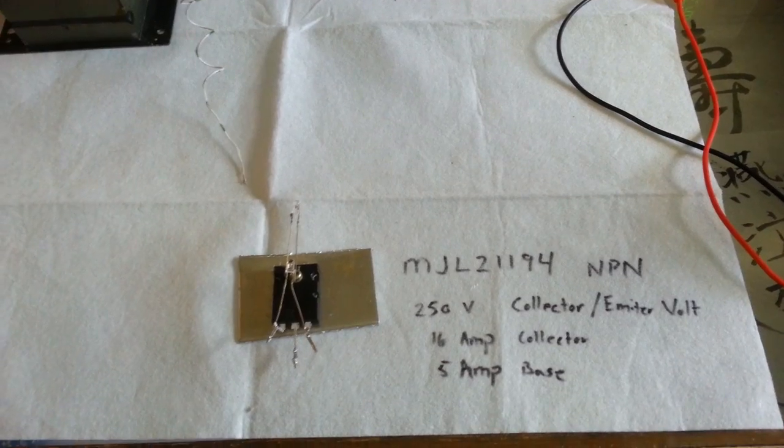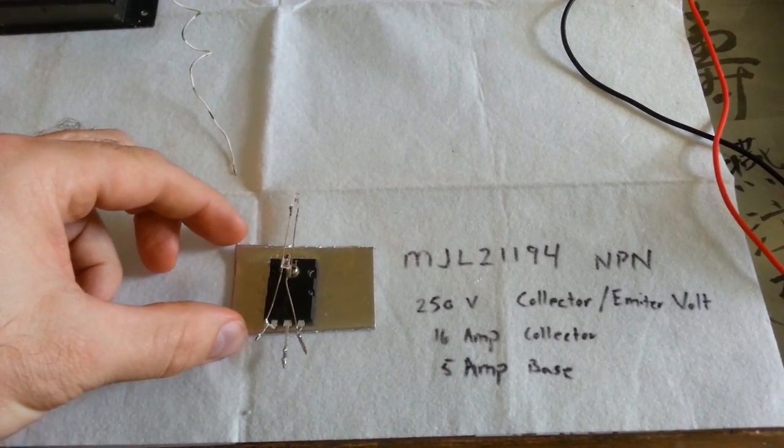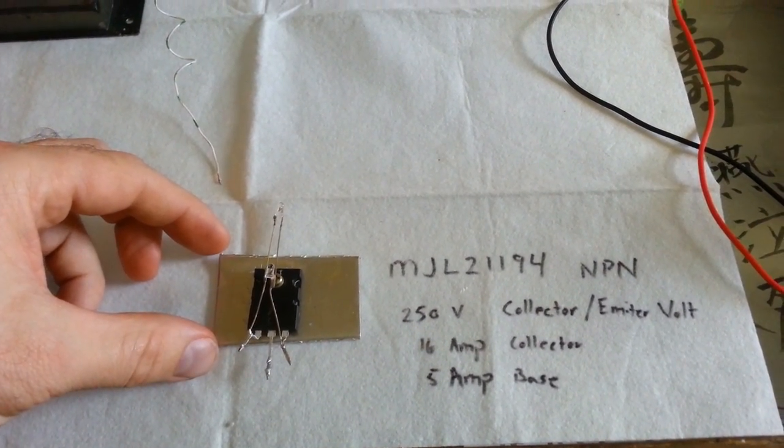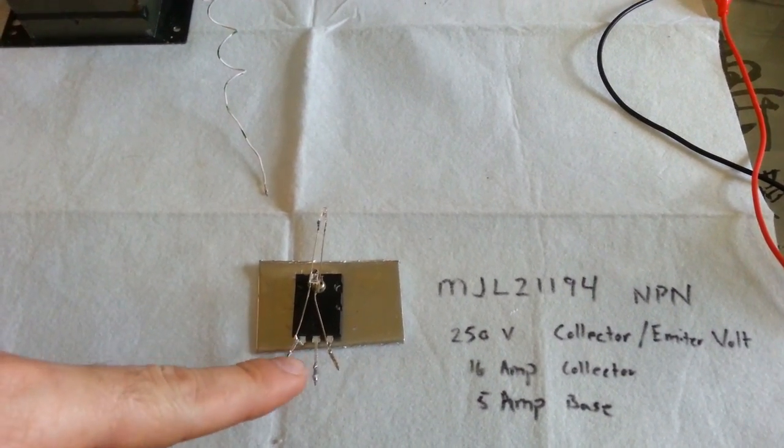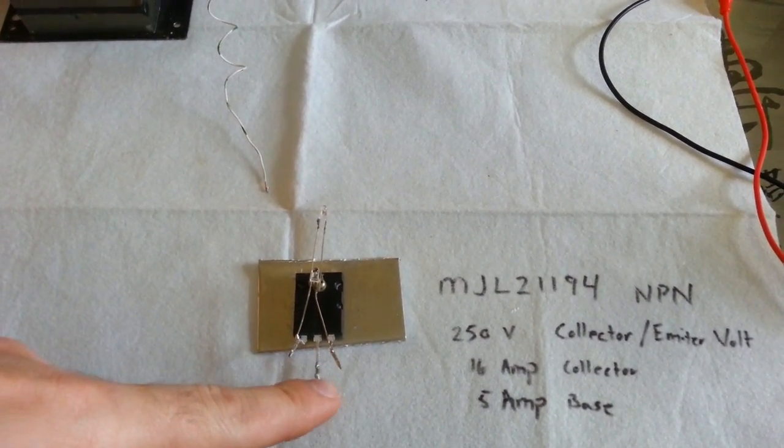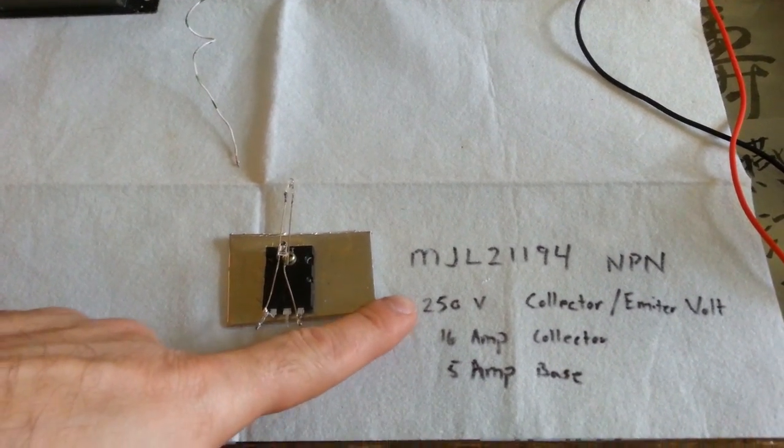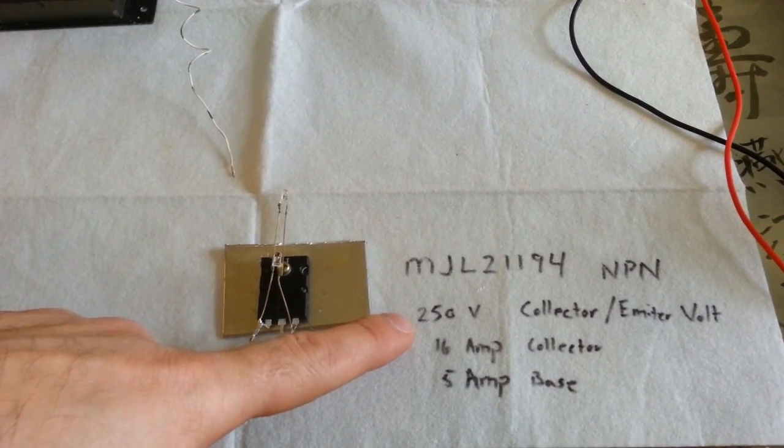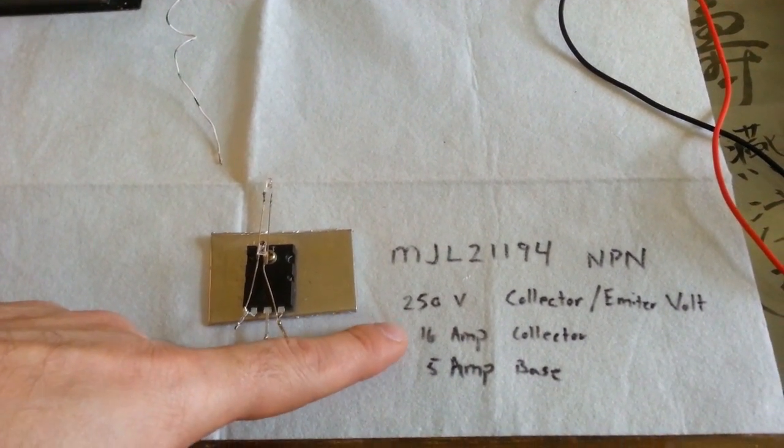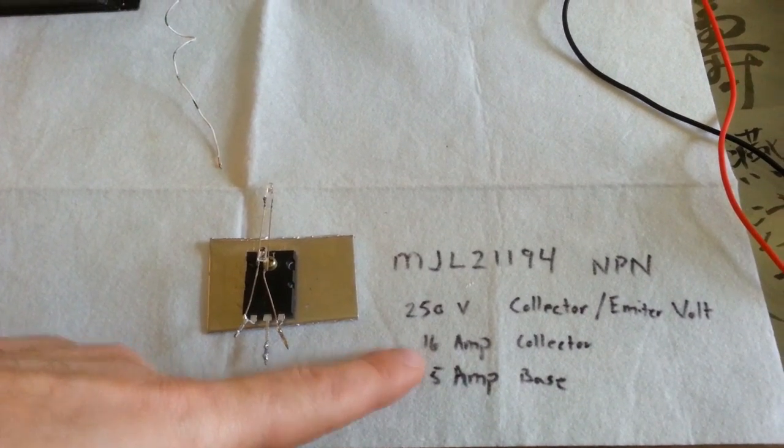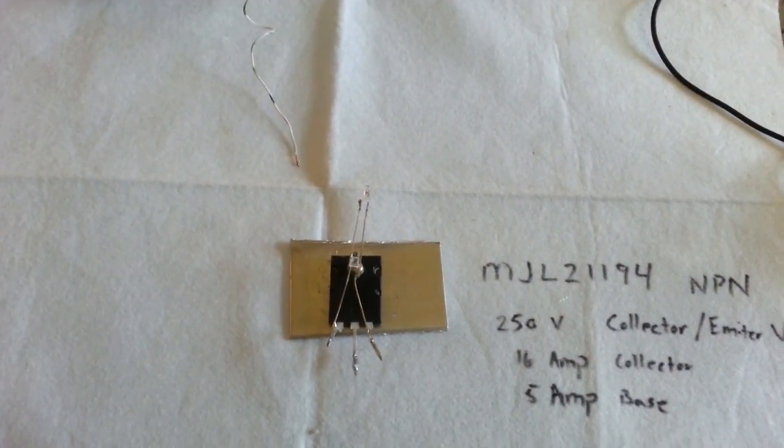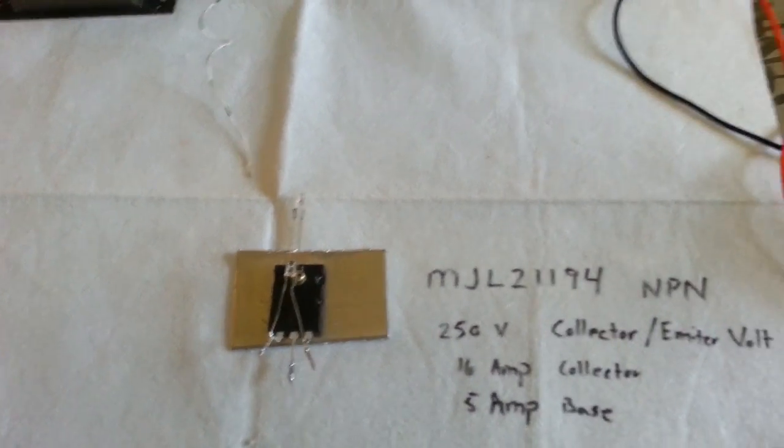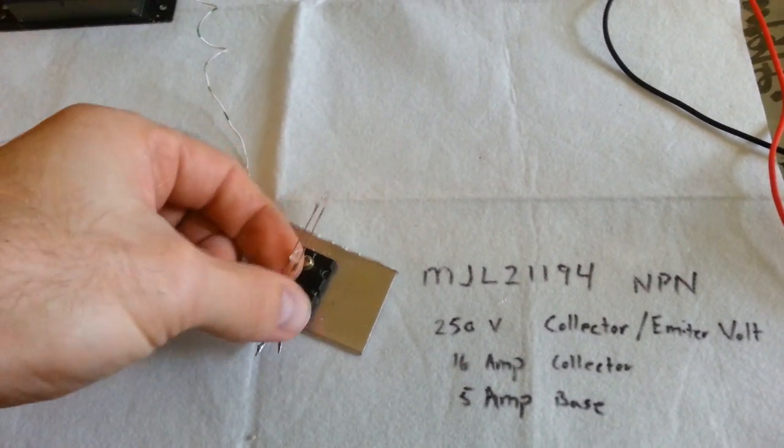I've got some information here. This is the transistor that I'm using, it's MJL21194 NPN. The reason I'm using this transistor is I actually bought it for a different project of mine, but it works really well with this one. It's rated at 250 volts on your collector, 16 amps, and this can handle a lot of wattage without getting overhot and without burning up. I have yet to have it heat up at all.